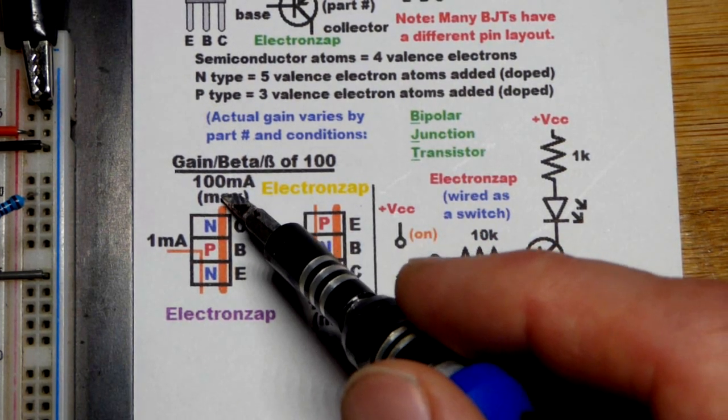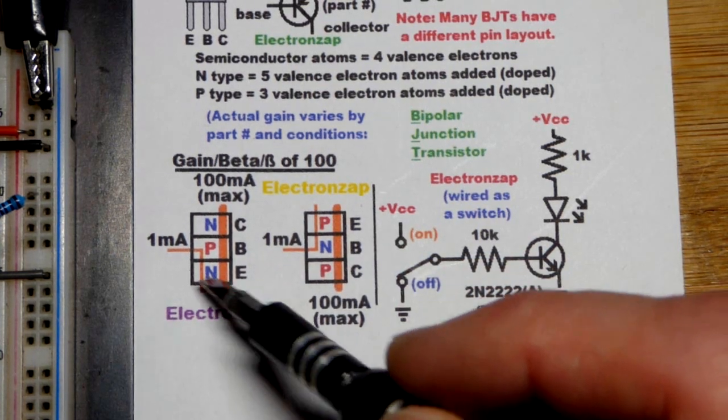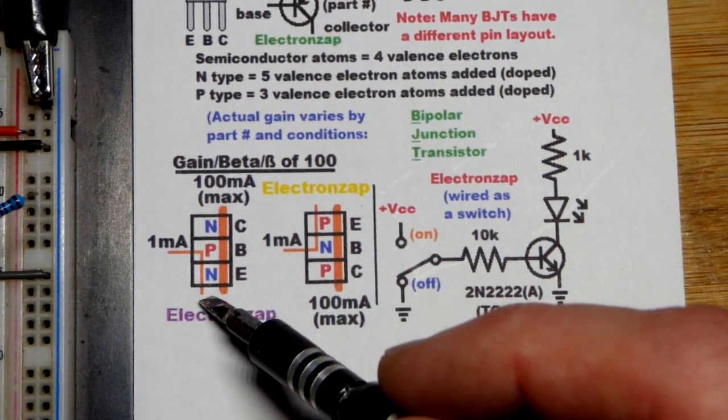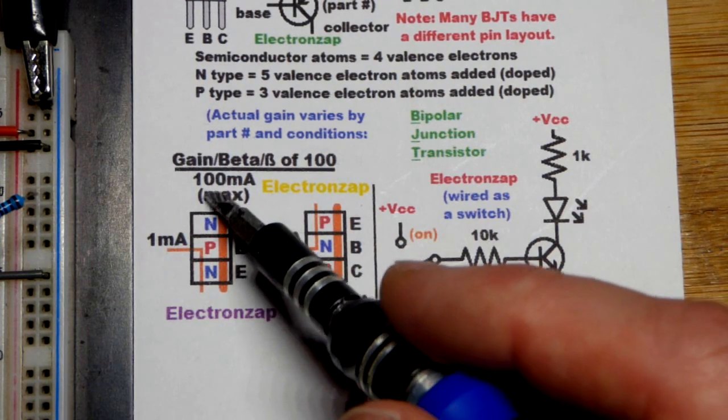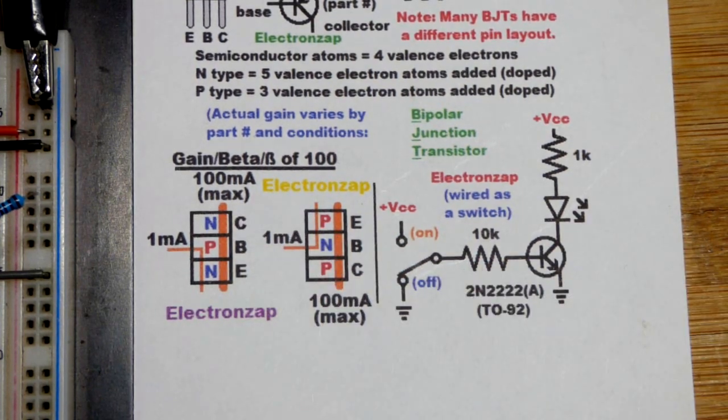That means 100 times the current will go from collector to emitter that you are letting through base to emitter. Of course, you can set it lower than that, but that would be the maximum it will let through. Most transistors have more gain than 100.